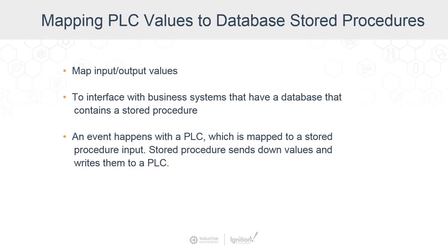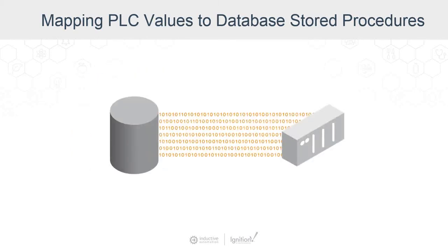When a PLC event or trigger happens, we can run a transaction group that sends values to a stored procedure in the database. The procedure executes and the results are sent back to the PLC, effectively handshaking the PLC with the database. This is a very commonly used pattern for many applications. It also keeps more logic in the database, keeping Ignition cleaner without requiring scripting. In fact, transaction groups largely eliminate the need to do scripting in Ignition.